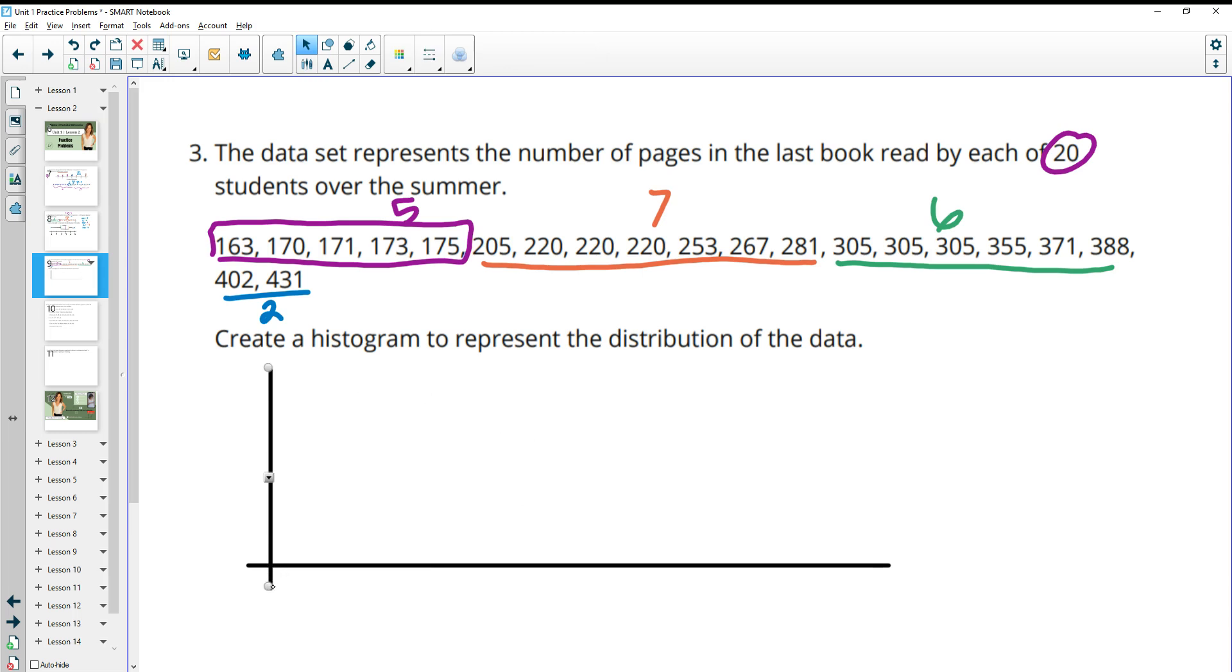So that tells me that my vertical measure needs to go up to seven. So I'm just going to make this a little bit longer here. So this would be 1, 2, 3, 4, 5, 6, 7. And I'm just going to mark that one at five. And then I'm going to start at, I'm going to put a space at zero. I'm going to put this at zero, and then this will be 100, 200, 300, 400, 500.